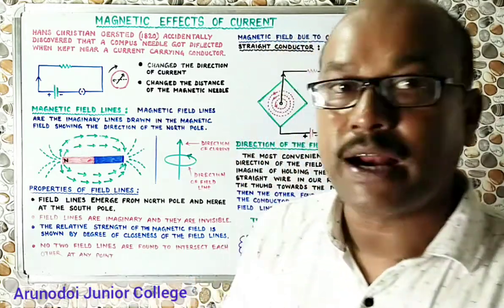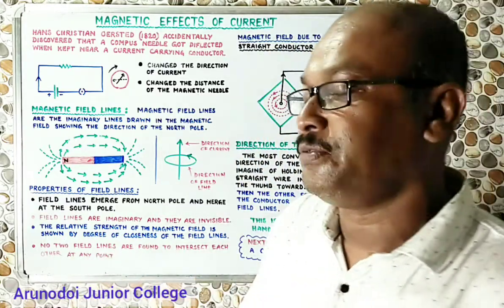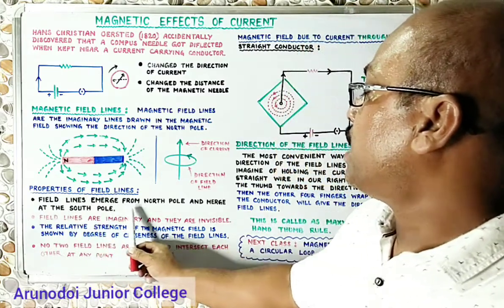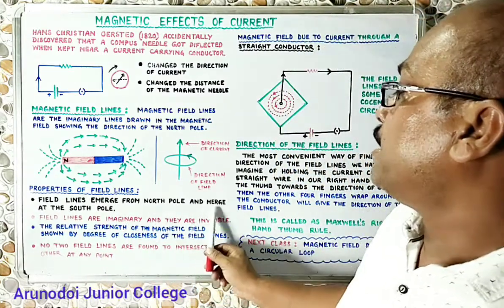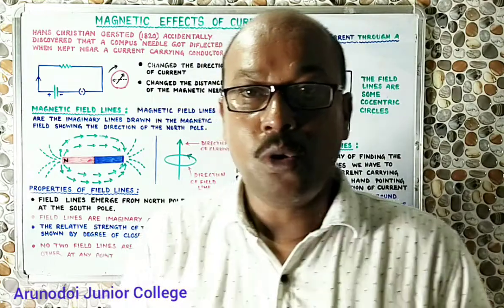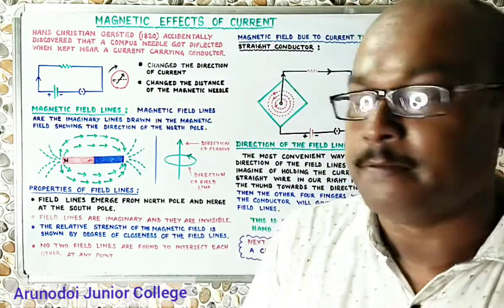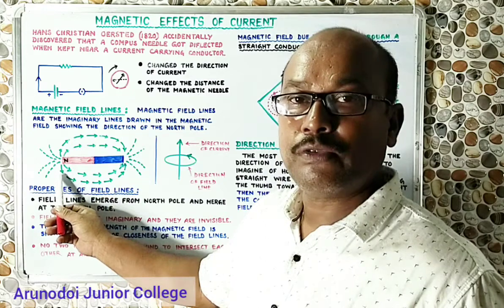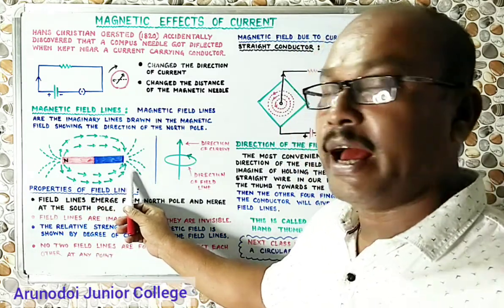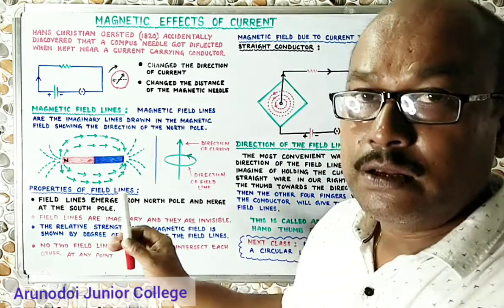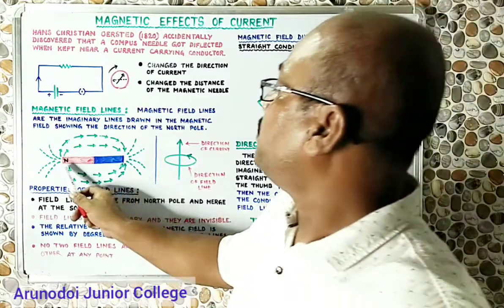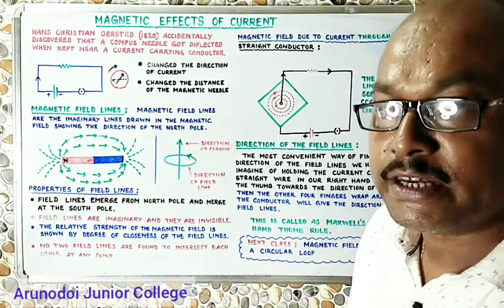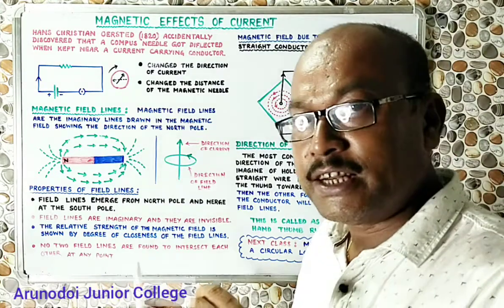There are four properties of magnetic field lines. The first property is that magnetic field lines emerge from the North Pole and they merge at the South Pole. All magnetic field lines — without exception — will start from the North Pole and end at the South Pole.